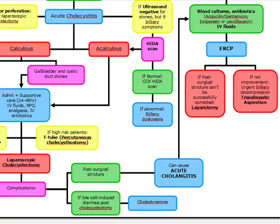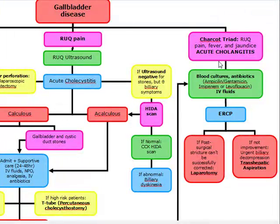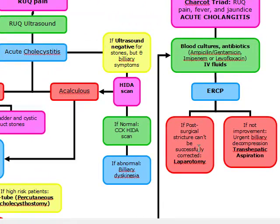A stricture can cause acute cholangitis, which is characterized by Charcot's triad: right upper quadrant pain, fever, and jaundice. You're going to obtain blood cultures and start antibiotics — combinations can be ampicillin-gentamicin, imipenem, or levofloxacin — and give IV fluids. Cholangitis is much worse than cholecystitis, so you have to do emergency decompression of the common bile duct to save their life, via ERCP. If it can't be successfully corrected, proceed to laparotomy. If there's no improvement after urgent biliary decompression, do transhepatic aspiration.